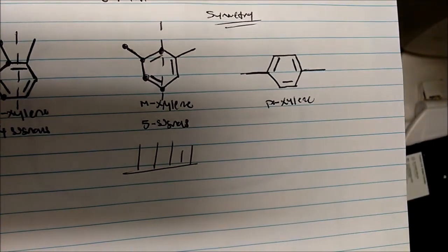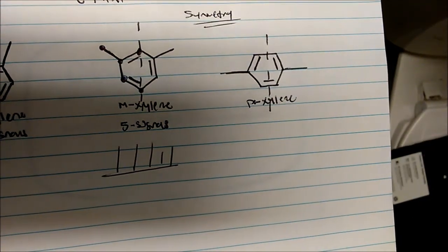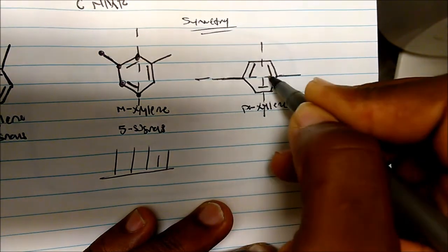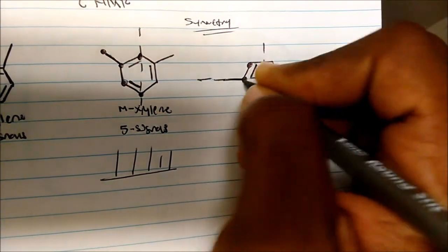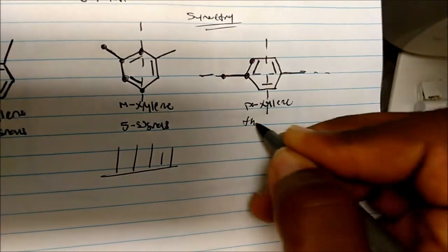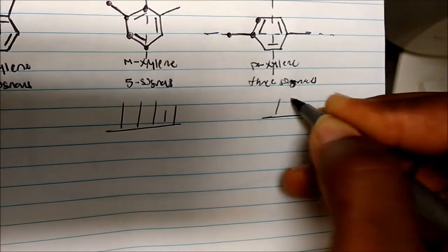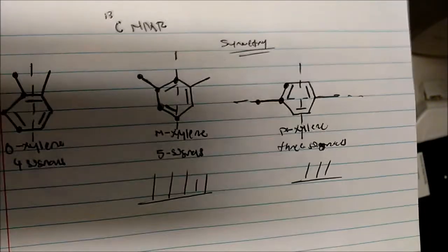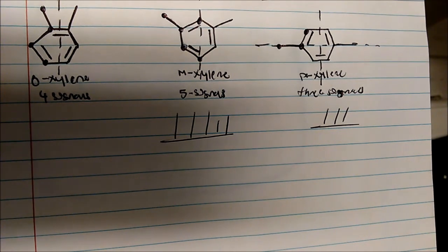Now how about Para-Xylene? I could draw a vertical line through here and get two equal halves. But I could also draw a horizontal line through this molecule and still get two equal halves. So how many different carbons are there? One, two, three. Therefore for this one, I would see three signals. This would be way better than proton NMR. Carbon-13 NMR tells you how many different carbons are there by drawing symmetrical lines to see if your molecule is symmetrical.